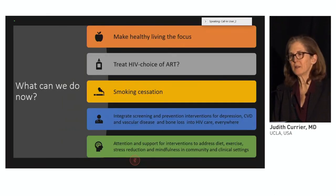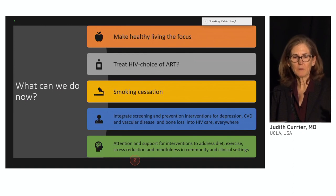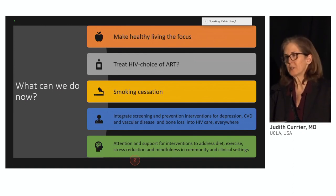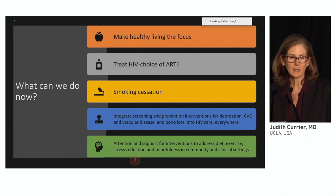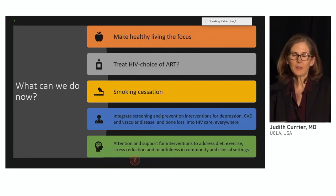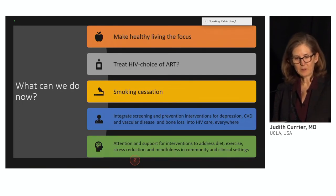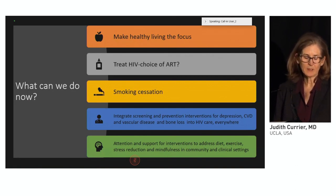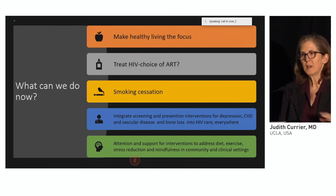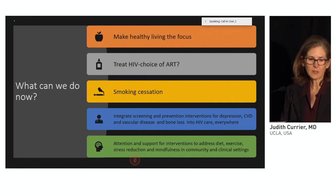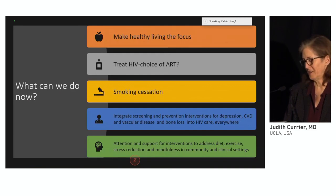What can we do now? Make healthy living the focus. Treat HIV, and identify and treat comorbidities — though as noted, what is the optimal treatment deserves more attention. Smoking cessation is probably one of the most important things we can do in the clinical setting. Integrating screening and prevention interventions for depression and other comorbidities into practice everywhere globally is important, along with attention and support for changes in diet, exercise, stress management, and mindfulness in both community and clinical settings.